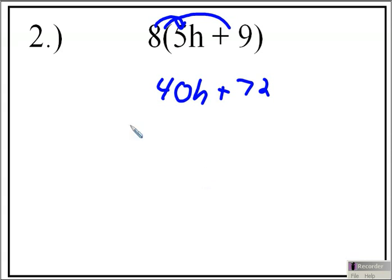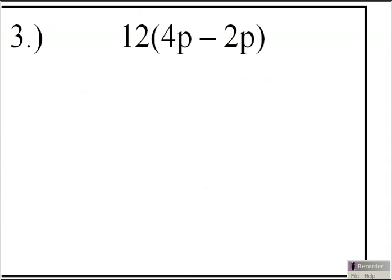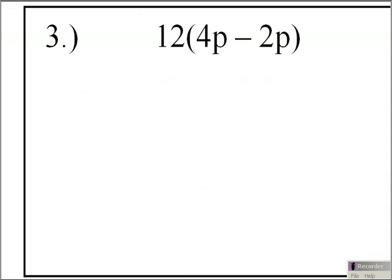Now we're going to skip forward and look at problem number 3. We're taking 12 times, in parentheses, 4P minus 2P. To do that, we do the same thing as we did in problem number 2 — we're going to distribute the 12 to the 4P.